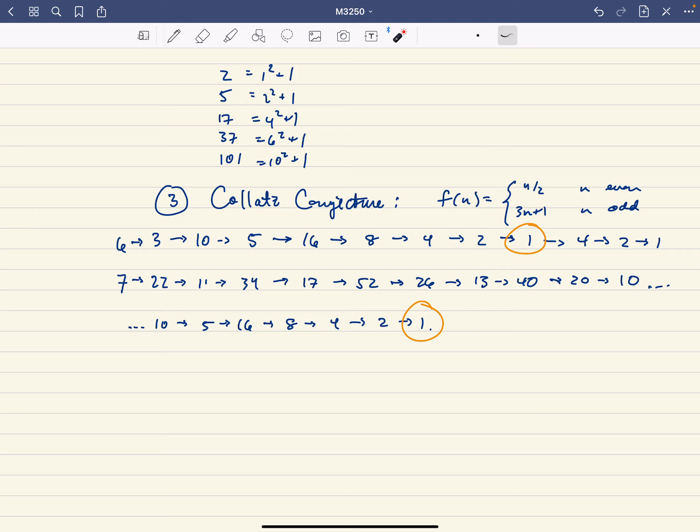For example, going from 11 to 34 to 17. And the point is that here the numbers are getting slightly bigger. And so you can't ever prove that the numbers are decreasing to 1, because on average, maybe they're not.